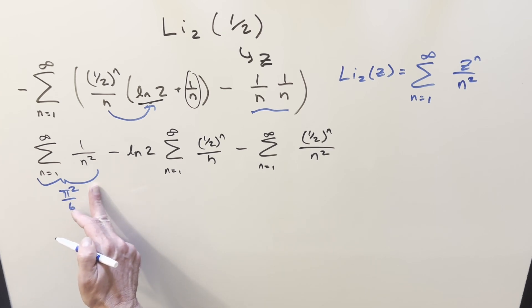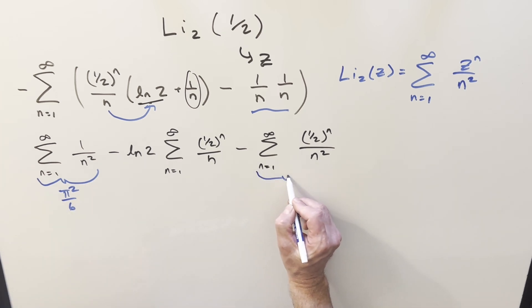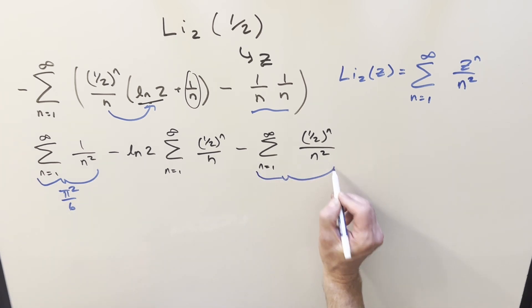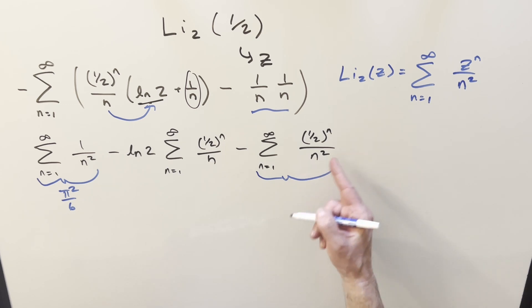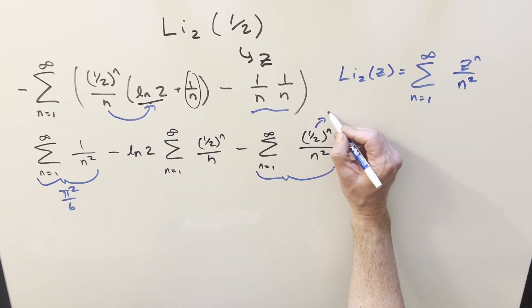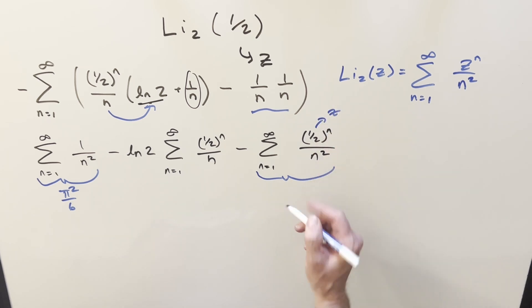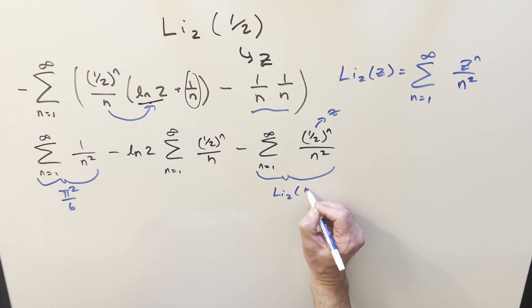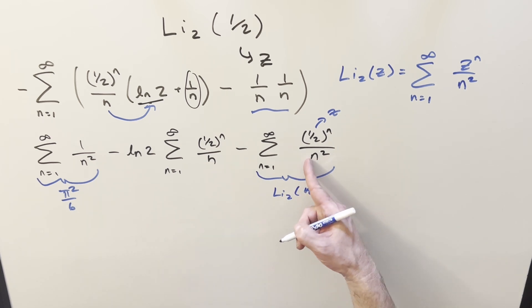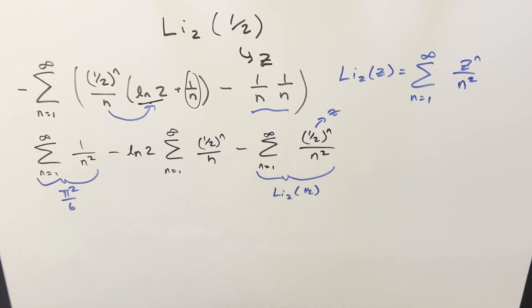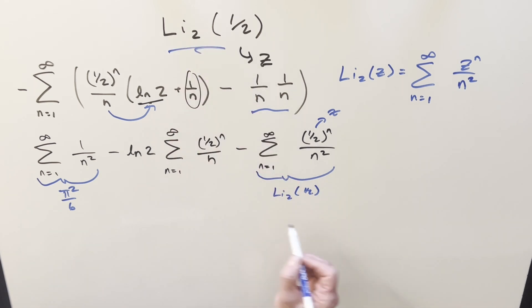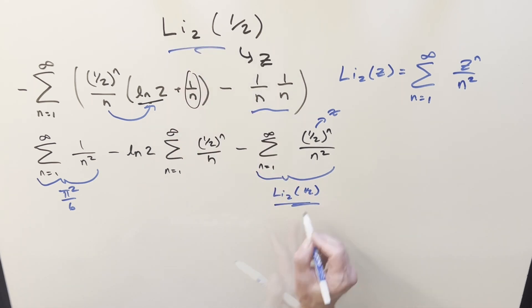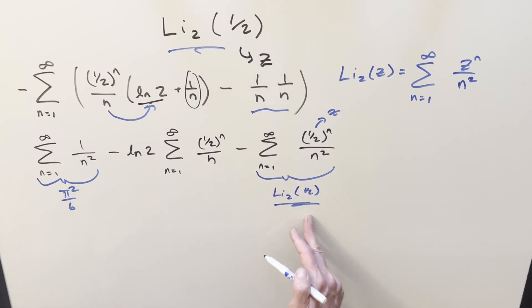Now this second sum — going back to our definition, if we think of 1/2 as the input z, this right here is the dilogarithm of 1/2, which is exactly what we're trying to find. We've reintroduced it into the problem. We don't know what it is yet, but we can recognize it and know we need to solve for this value.